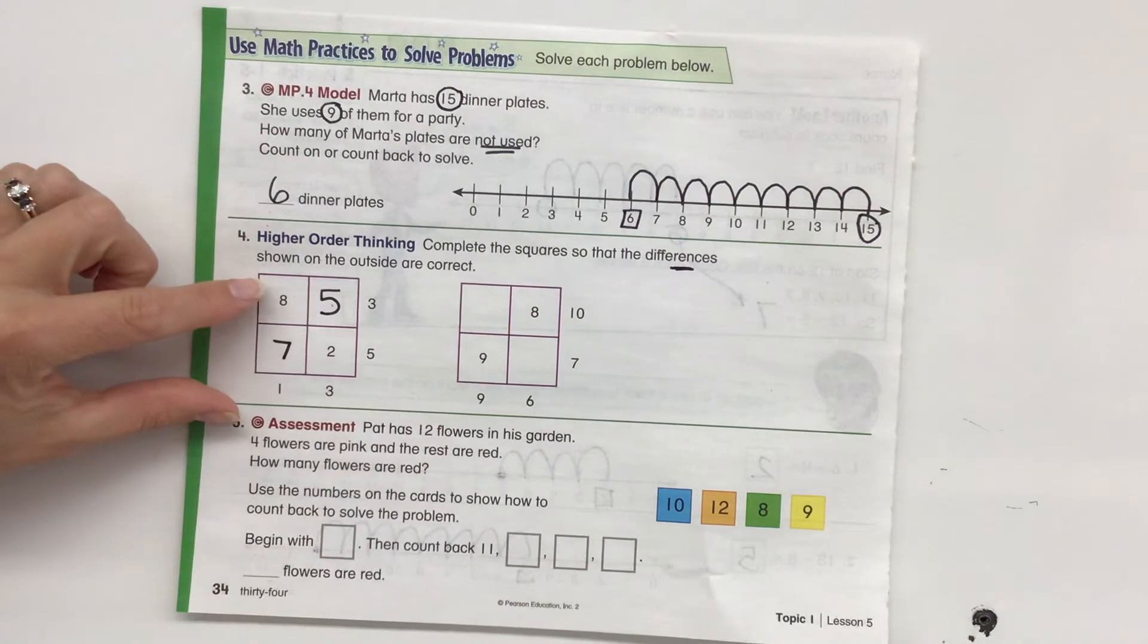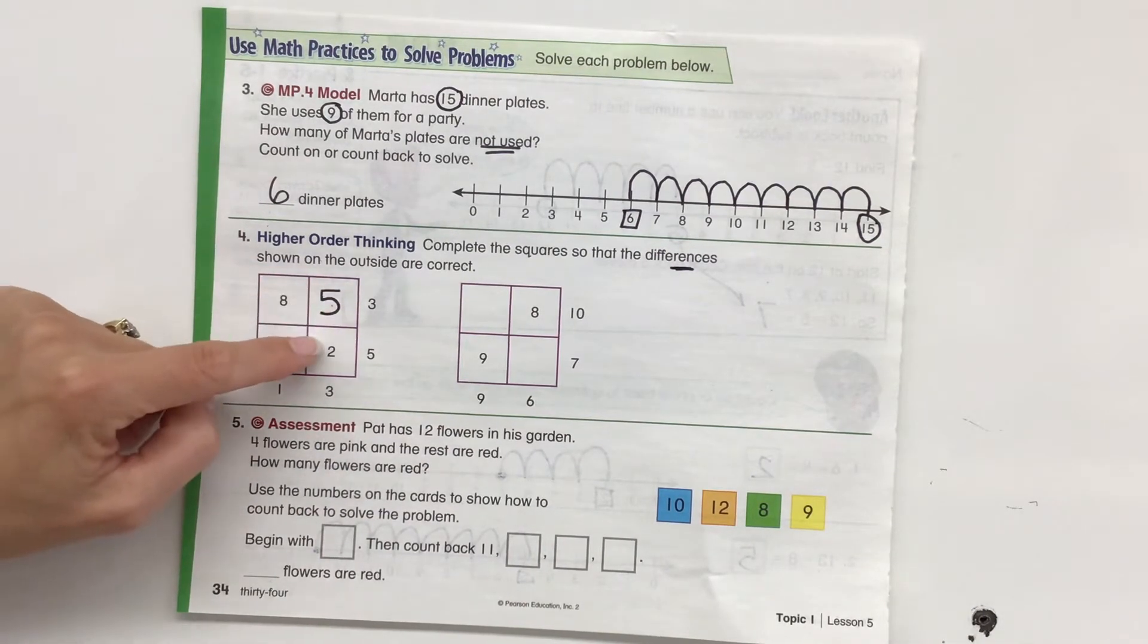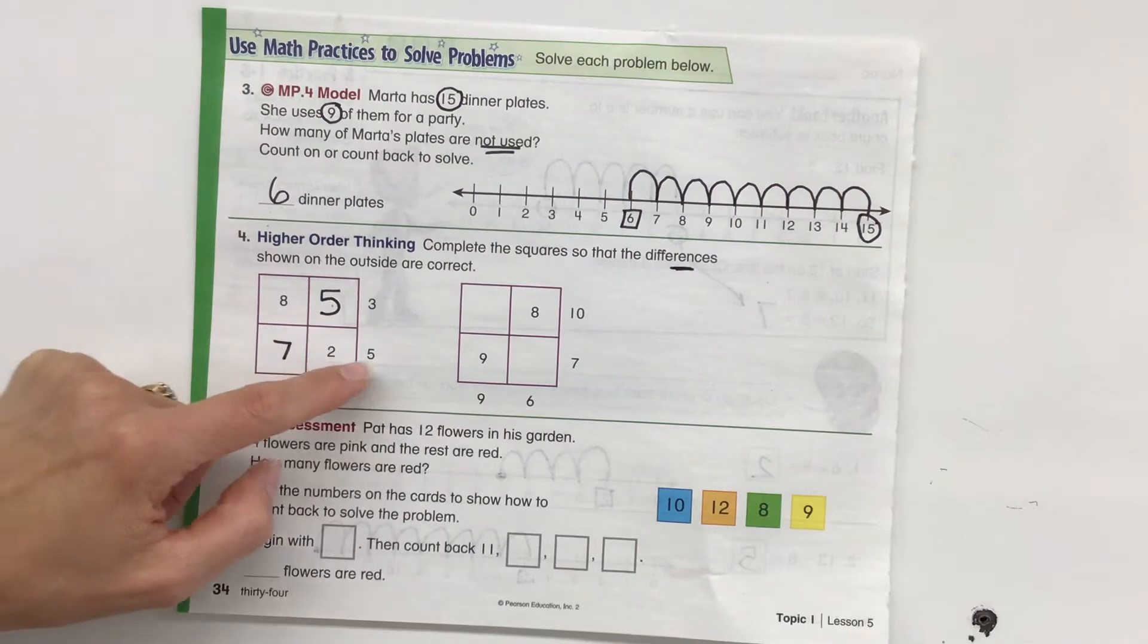Now take a look at this. So we're subtracting 8 minus 7 is 1. 5 minus 2 is 3. 8 minus 5 is 3. 7 minus 2 is 5.